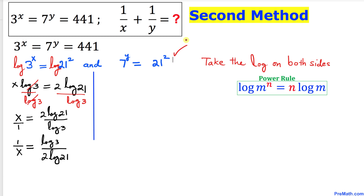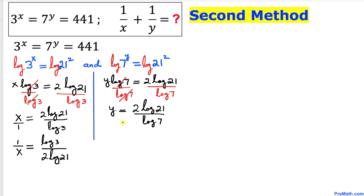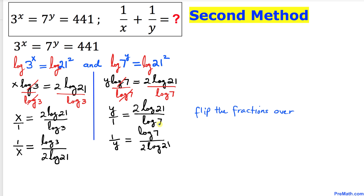Now for the second equation, taking the log on both sides and applying the power rule gives y log 7 equals 2 log 21. Dividing both sides by log 7 gives y equals 2 log 21 divided by log 7. Flipping the fractions gives 1 over y equals log 7 divided by 2 log 21.